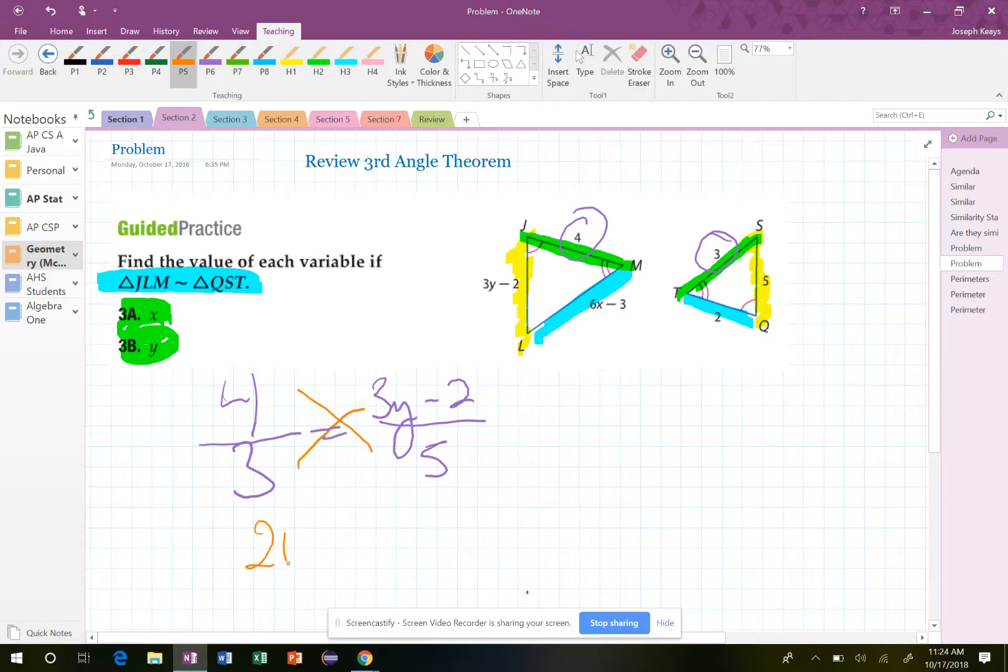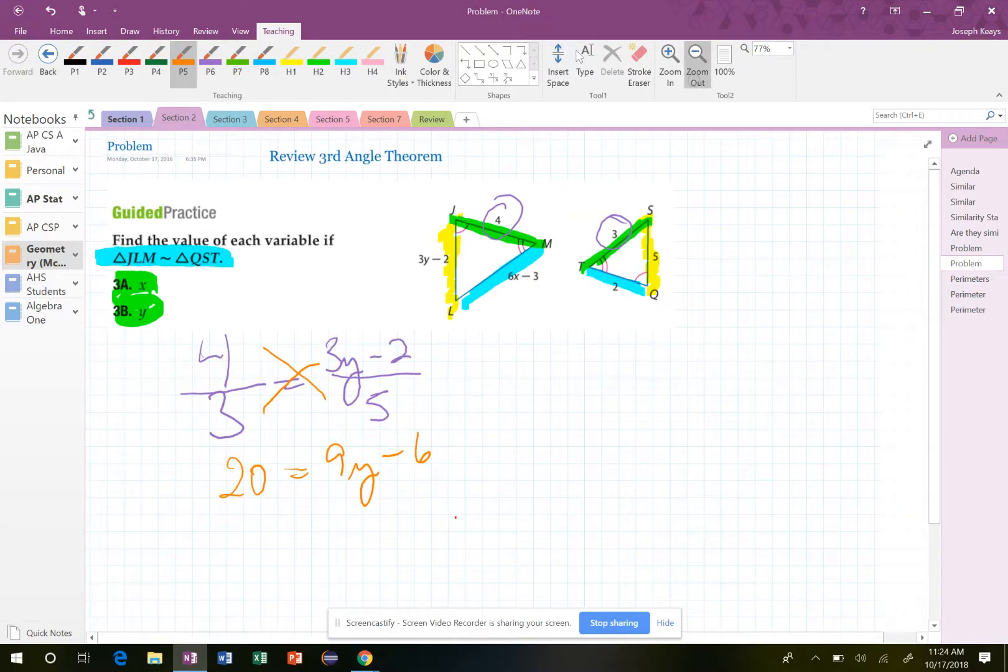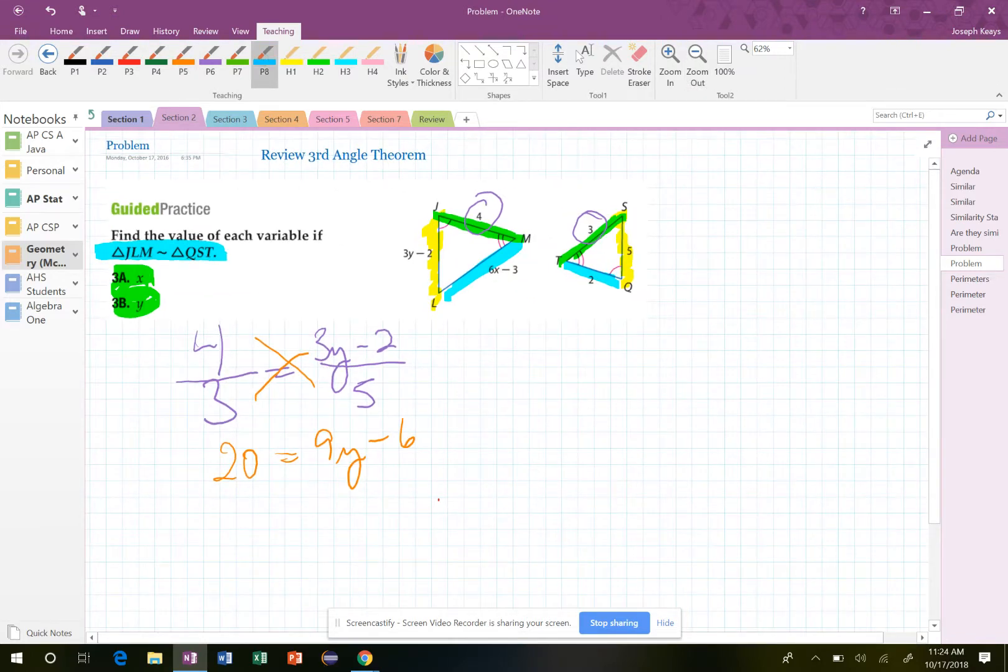So now we have to go back to section 7.1 and be able to be very comfortable with solving for this. So when we cross multiply in here, this is going to be 20 equals 9Y minus 6. And so I bring the 6 on the other side. It's 26 equals 9Y.